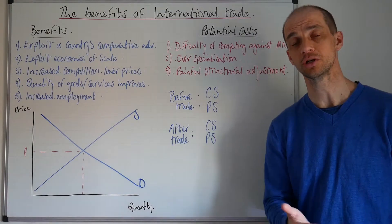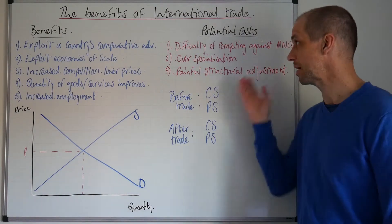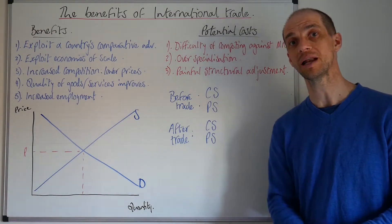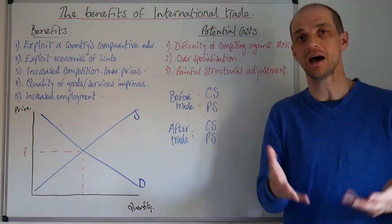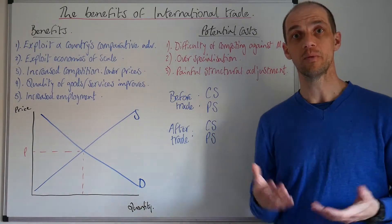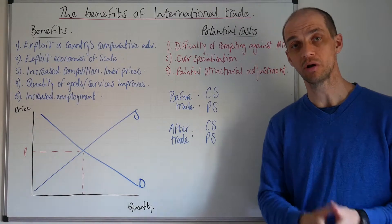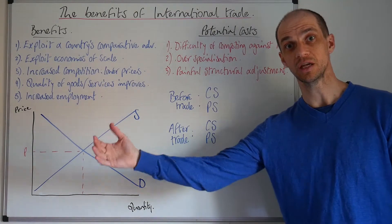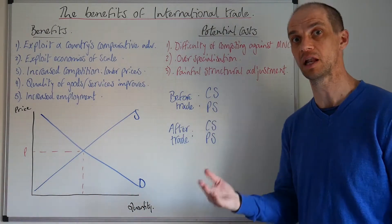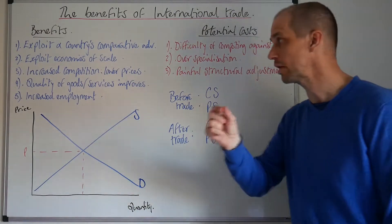Number two, you can have over-specialisation as well. Over-specialisation may result in, for LEDCs, primary product dependency. That primary product dependency may end up meaning that they never actually move up the value-added chain. They will further experience what's known as the Prebisch-Singer hypothesis, where you see declining terms of trade because of the differences in the income elasticities of demand for primary goods versus imported consumer goods, which have high income elasticities of demand, whereas goods like oil have very weak income elasticities of demand, even though they're slightly positive.